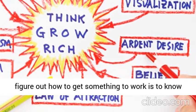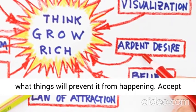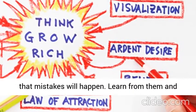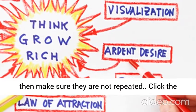Basically, the only way we can figure out how to get something to work is to know what things will prevent it from happening. Accept that mistakes will happen. Learn from them, and then make sure they are not repeated.